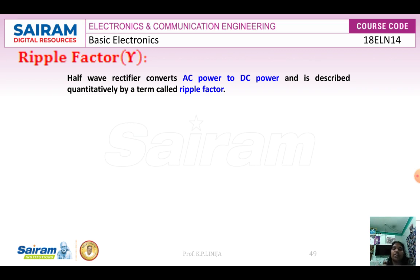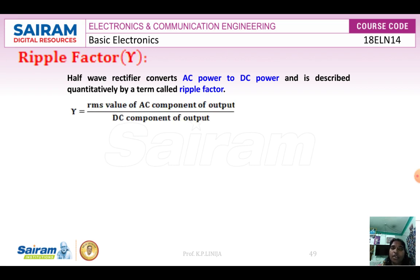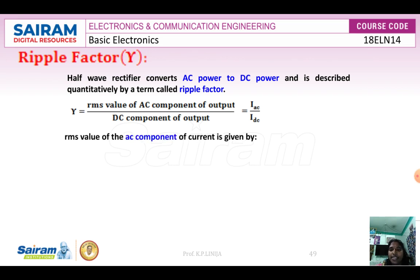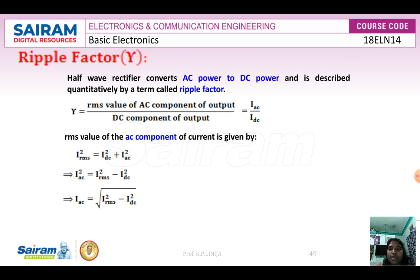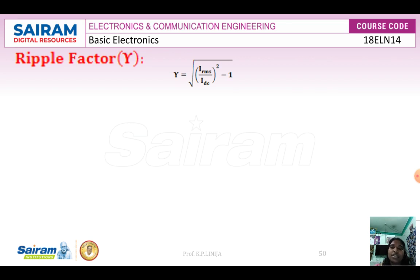The rectifier converts AC power to DC power. The ripple factor quantifies this conversion and is defined as gamma equals the RMS value of the AC component of output divided by the DC component of output, that is IAC divided by IDC. Since I²RMS equals I²DC plus I²AC, we get I²AC equals I²RMS minus I²DC. Therefore the ripple factor is: gamma equals the square root of (IRMS/IDC)² minus 1.